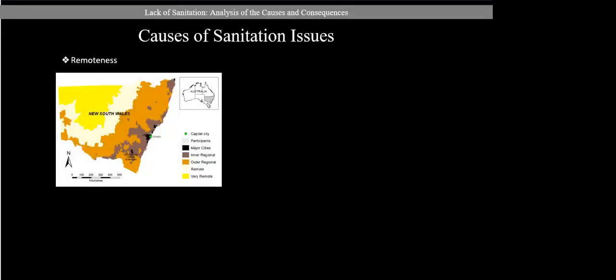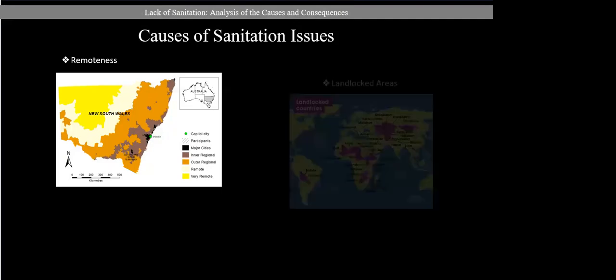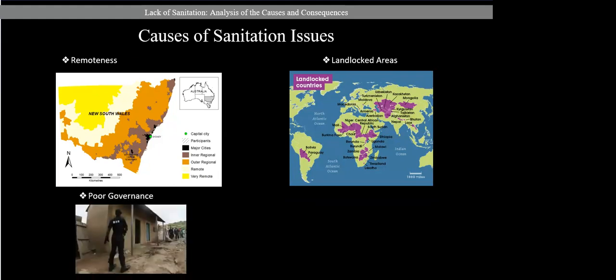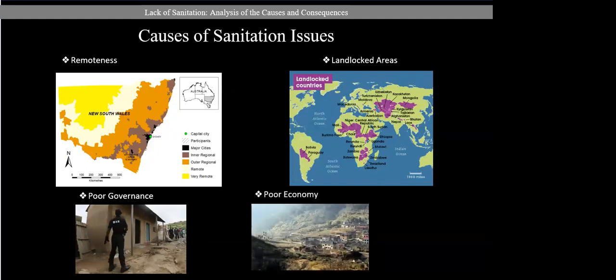Remoteness: around the world there are millions of people, mainly in Africa, who must walk several kilometers to the nearest water source, which in some cases is not drinkable. Landlocked areas: these are areas without access to the sea or significant water bodies nearby to supply water — for example, in Central African countries. Poor governance: poor management of water resources. And finally, poor economy: countries with sanitation problems are often the poorest because they cannot invest in adequate sanitation systems.